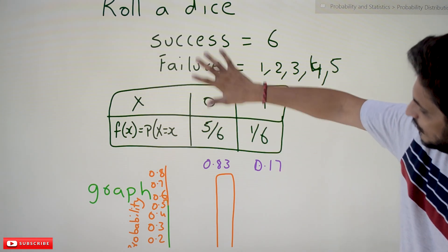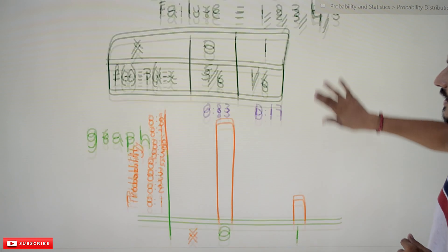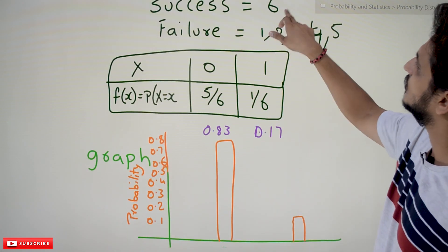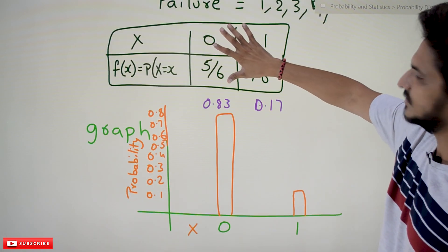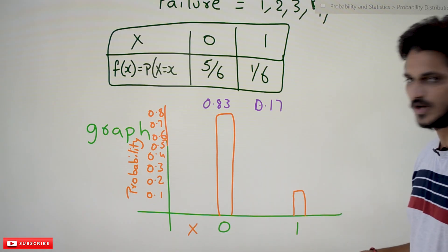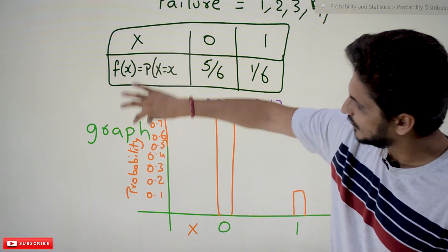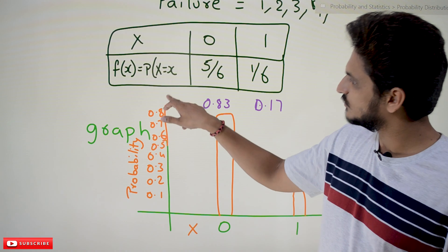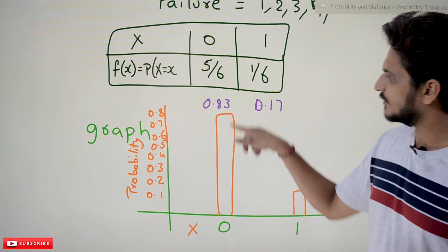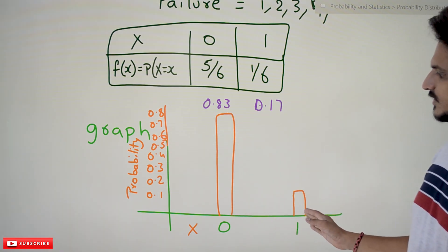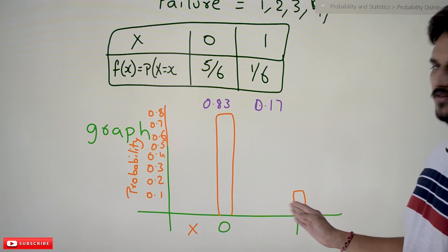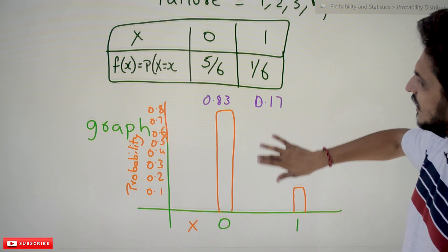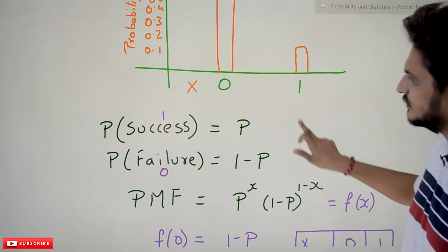A graphical intuition will help you a lot in understanding the concepts. If you plot the Bernoulli distribution for rolling a dice — success equals 6, failure equals 1 through 5 — on the X axis we take the random variable 0 and 1, and on the Y axis we take probability values from 0.1, 0.2, up to 1. For 0, the probability is 0.83, so the bar is tall; for 1, the probability is 0.17, so the bar is short. This is how we graph a discrete probability distribution.